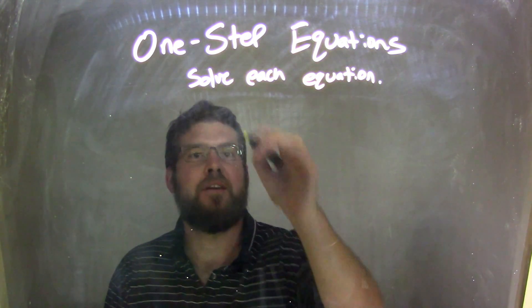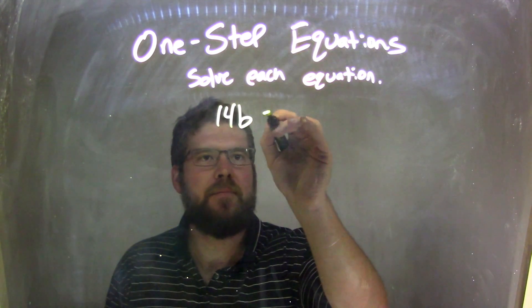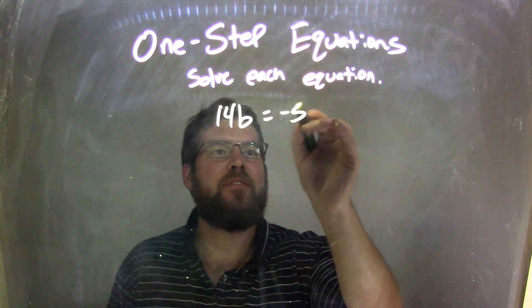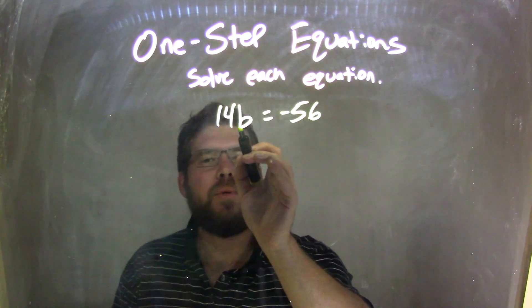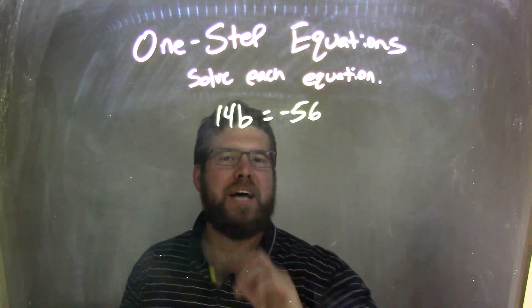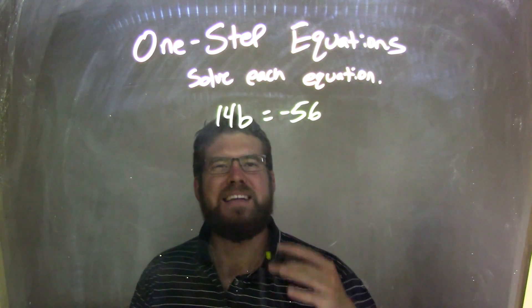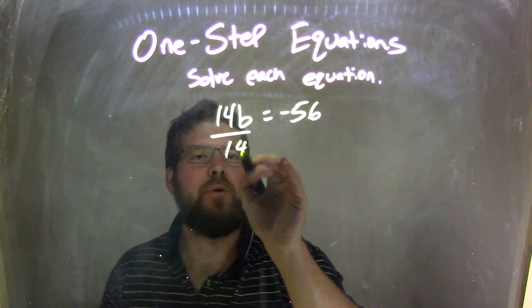If I was given this equation, 14b equals negative 56, well, I have multiplication here. 14b is 14 times b, and the opposite of multiplication is division, so I need to divide by 14 on both sides.